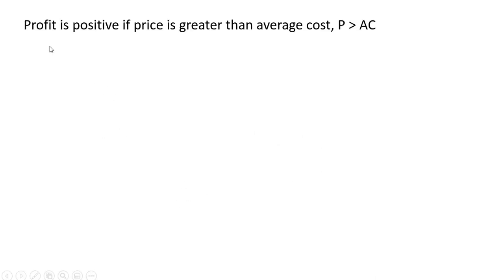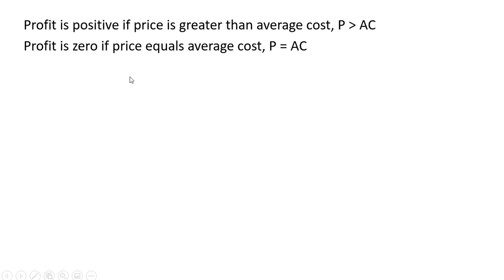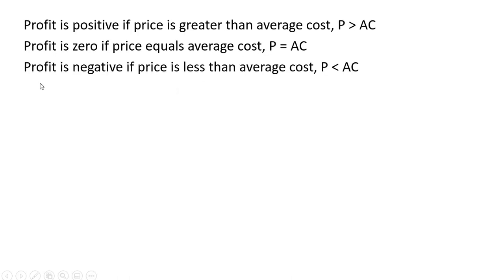Some background: positive profit will occur when the price exceeds average cost — price is greater than average cost, the firm will be making positive economic profit. When price equals average cost, economic profit is zero. And finally, profit is negative if price is less than average cost.